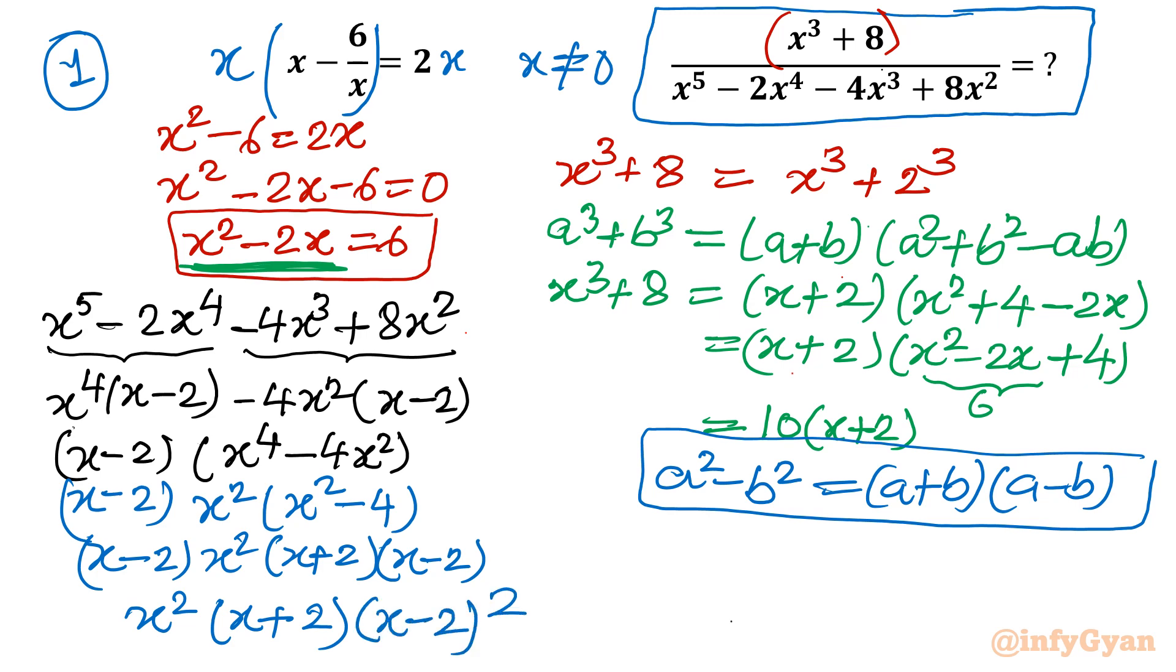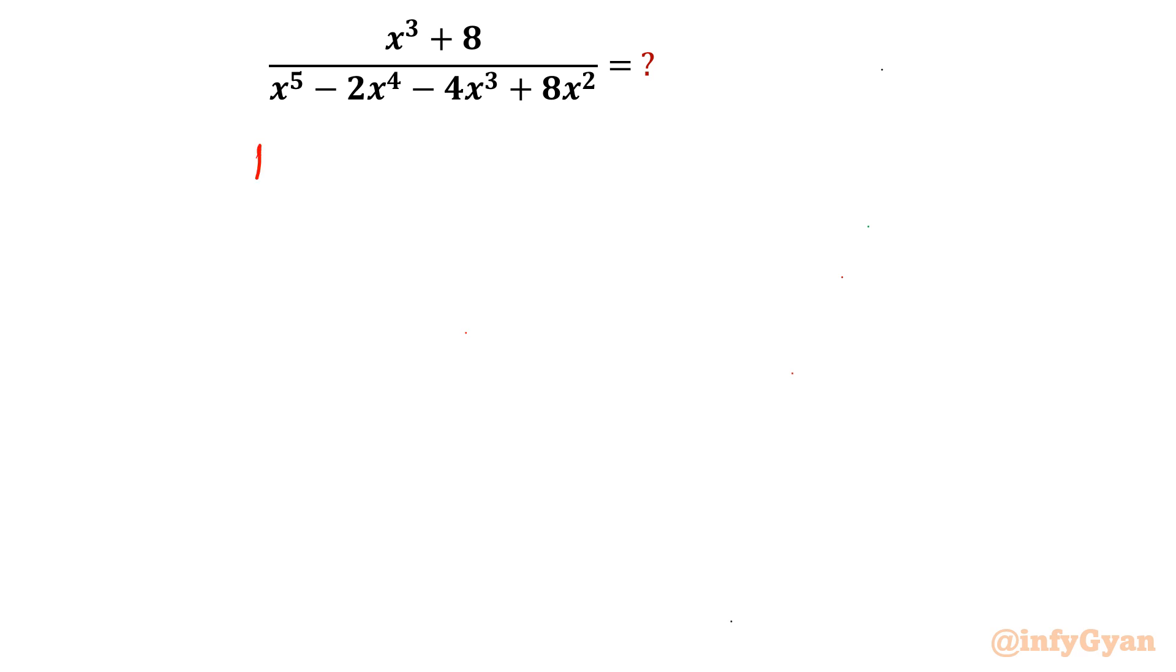So we have calculated so far numerator and denominator both. Numerator is 10 times x plus 2 and denominator is x square times x plus 2 times x minus 2 whole square. Let's put the value. So I will write 10 times x plus 2 numerator and denominator is x square times x minus 2 whole square times x plus 2. Now cancel whatever you can cancel. So x plus 2 will be over.